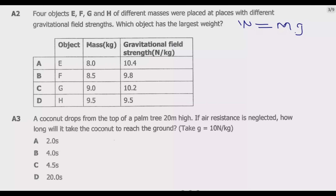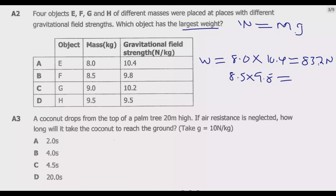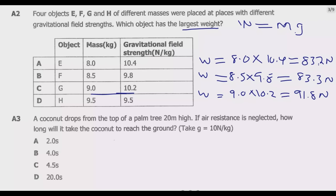For the first object: 8.0 kg multiplied by 10.4 N/kg gives 83.2 N. For the second: 8.5 multiplied by 9.8 gives 83.3 N. For the third: 9.0 multiplied by 10.2 gives 91.8 N. For the fourth: 9.5 multiplied by 9.5 gives 90.25 N. The largest value is 91.8 N, which corresponds to option C. So C is the correct answer.